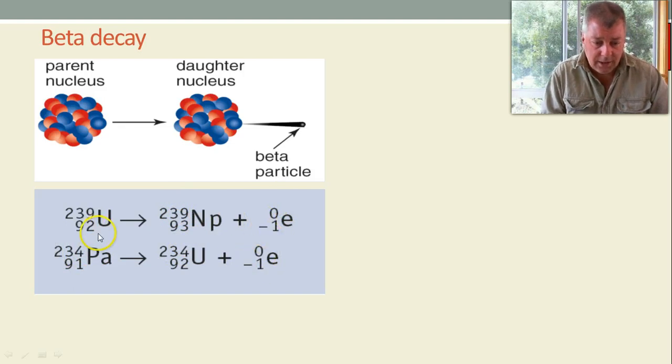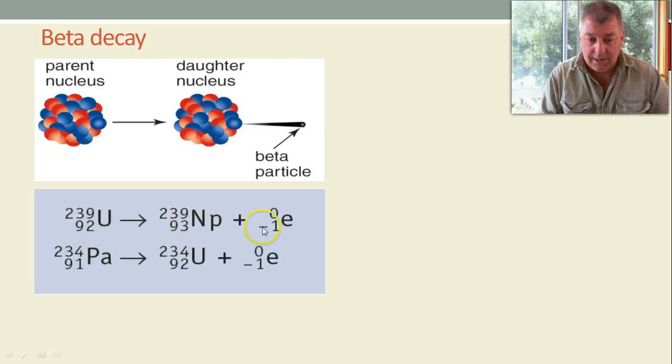And notice that here the numbers, 92, have to add up. So, the numbers to the left of the arrow have to equal the numbers to the right of the arrow, above and below the line. So, 92 equals 93 plus minus 1, and 91 equals 92 plus minus 1, whereas on the top, 239 equals 239 plus 0. That minus 1 is important for that reason.